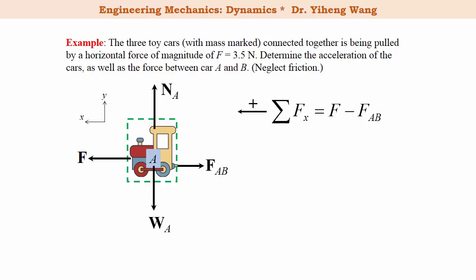And then we write the equation of motion on car A only. The resultant force acting in the positive x direction equals F minus FAB, and that equals the mass of car A multiplied by the acceleration along the x direction, which we solved for during the previous step. So we substitute in the known values and solve for FAB to be 2 newton. And that completes this problem.